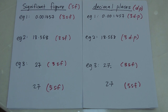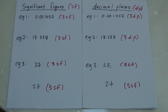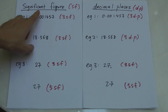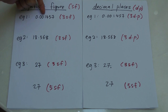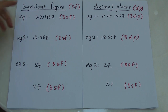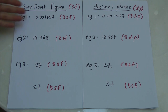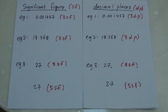For significant figures, it's a bit different. When counting numbers, all the zeros at the front are not counted, but the zeros at the back are counted as a number. Let's go through a few examples so you can understand it better.